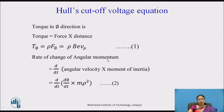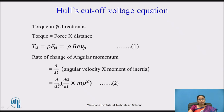The rate of change of angular momentum is given as d/dt of (angular velocity × moment of inertia). Angular velocity is d phi/dt and moment of inertia is m·rho². So the rate of change of angular momentum is d/dt(d phi/dt · m·rho²). This is equation 2.